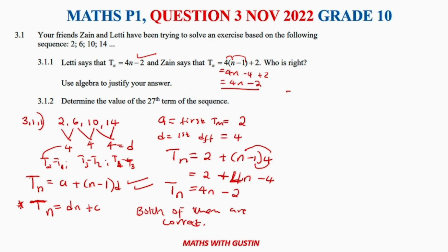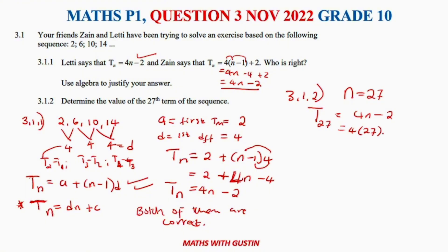For 3.1.2, we need to determine the value of the 27th term. We substitute n = 27 into our general formula: T27 = 4(27) − 2 = 108 − 2 = 106. So the 27th term is 106.